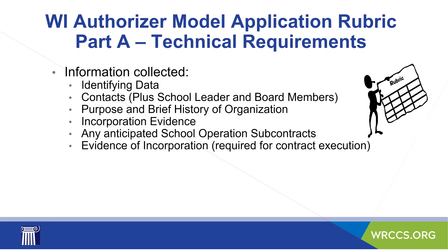Let's jump into the two parts of the model application suggested for Wisconsin authorizers. Part A — the technical requirements. The information collected is identifying data: How do I find you? Who's in charge? Who's the lead on the application? Contacts are very important for school leaders and board members. Also included: purpose and brief history of the organization, evidence of incorporation, what type of incorporation you have, any anticipated school operations subcontracts such as educational service providers, yellow bus contracts, or food service. Evidence of incorporation is required for contract execution, so it's important to have it up front.